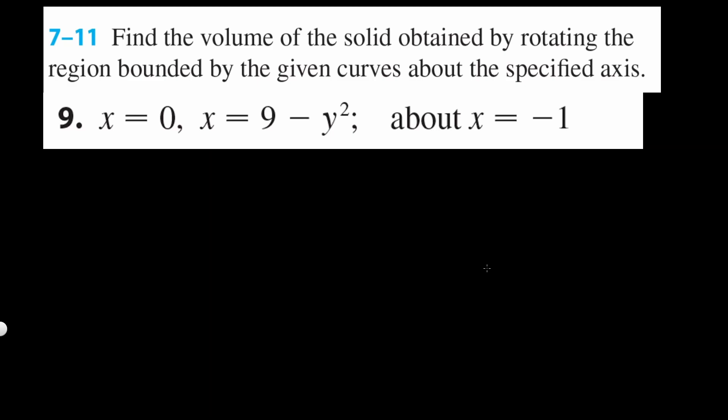In this problem, let's find the volume of the solid by rotating about x equals negative 1. So x equals 0 is just the vertical line here. That's x equals 0.